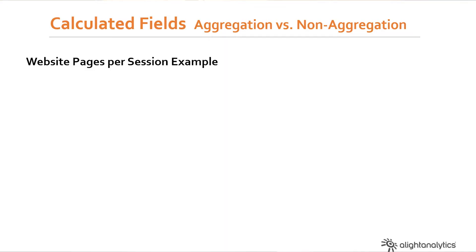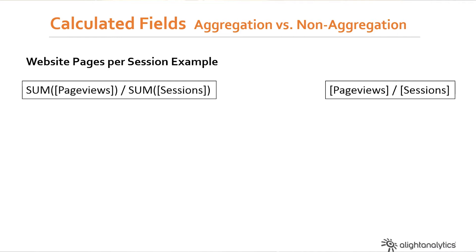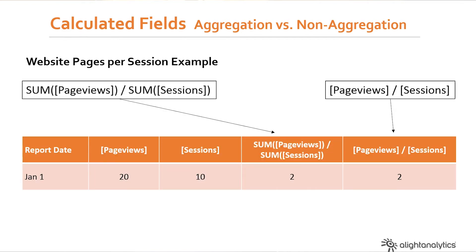Just got a couple slides to talk through the process. The example we're going to be talking through is website pages per session — how many pages does a user look at on your website during their session? There are two different ways we could write this calculation in Tableau: wrapped in a sum for each of the metrics, or each of the metrics by themselves. But this is going to return very different information, so we want to make sure we understand what Tableau is doing on the back end and what order it's happening in.